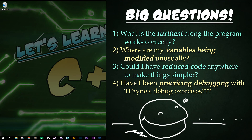Finally, I want to leave you some questions to ask yourself whenever you're running into problems. Write these down — tattoo them on your arm, whatever. What is the furthest point along the program that works correctly? What variables are acting incorrectly and where did they stop working right? Could I have reduced code anywhere to make things simpler on myself? And perhaps most importantly — have I been practicing debugging with T-Pain's debug exercises?